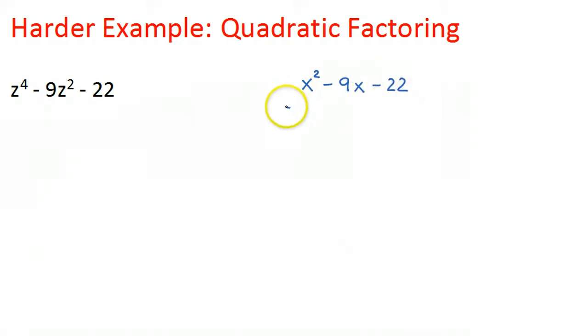Okay. So I see this is a simple case, so a is 1. So one way to do this is to quickly put my brackets out here and say x and x. And then my question is, what are two numbers whose product is negative 22 and whose sum is equal to negative 9?